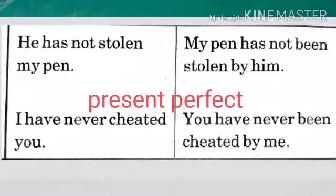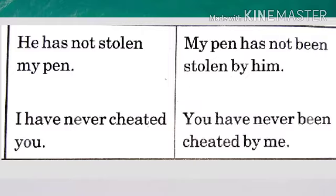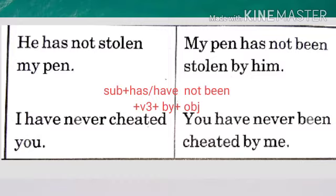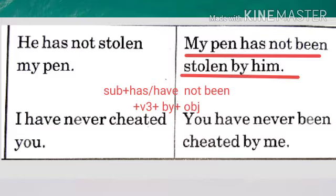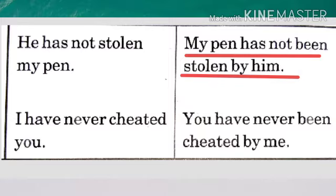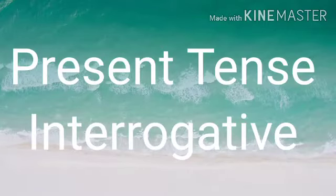Now for present perfect tense, negative: 'She has not stolen my pen.' The passive rule is: subject + has/have + not + been + third form of verb + preposition + object. So the answer will be: 'My pen has not been stolen by her.' You have to go according to the rule.